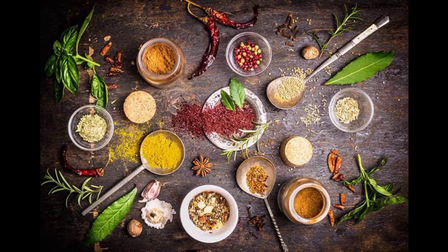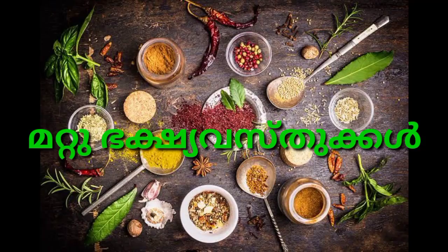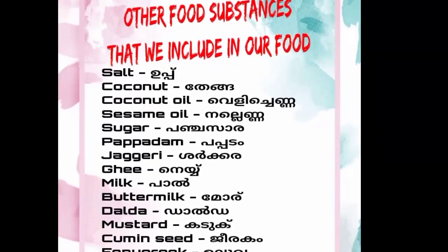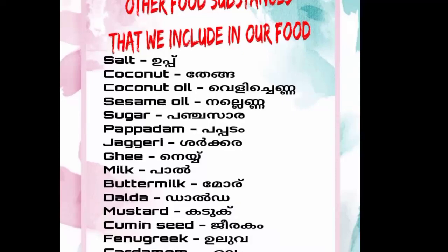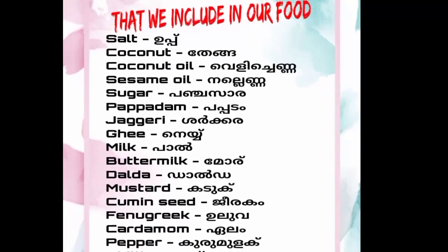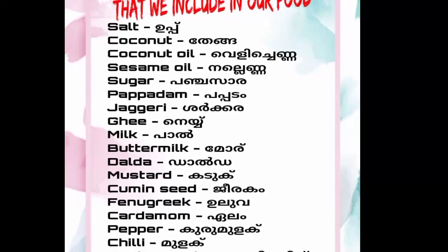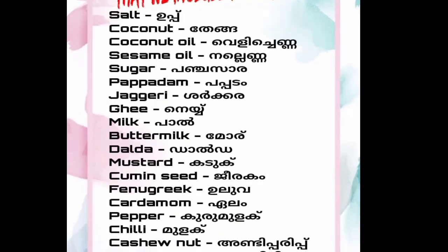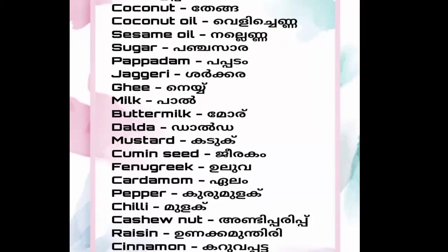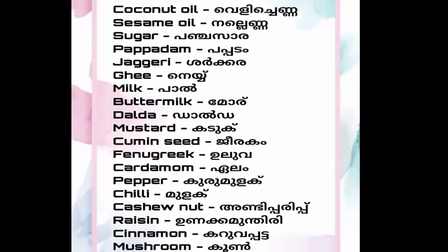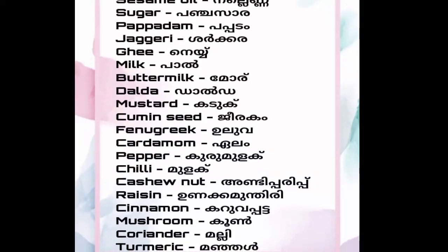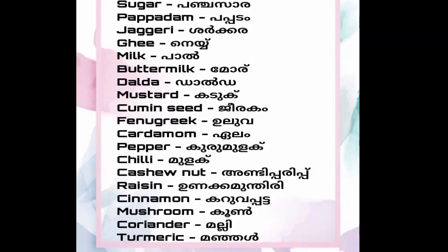Other food substances included in our food: Salt (Uppu), Coconut (Tenga), Coconut Oil, Sesame Oil (Nallenna), Sugar (Panjasaara), Pappadam, Jaggery (Shakara), Ghee (Naye), Milk (Pal), Buttermilk (Mole), Dalda, Mustard (Kaduku), Cumin Seed (Jeerakam), Fenugreek (Uluva), Cardamom, Pepper (Kurumulaku), Chilli (Mulaku), Cashew nut, Raisins, Cinnamon (Karuapatta), Mushroom (Koon), Coriander (Malli), and Turmeric (Manyar).